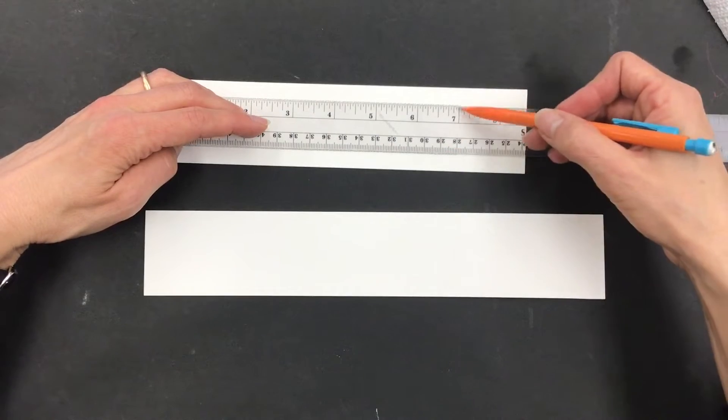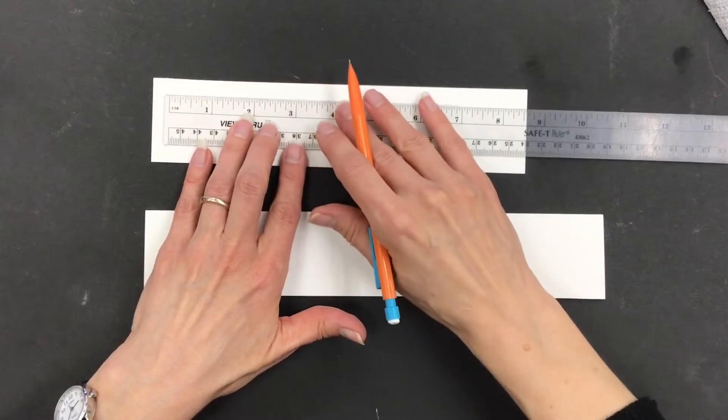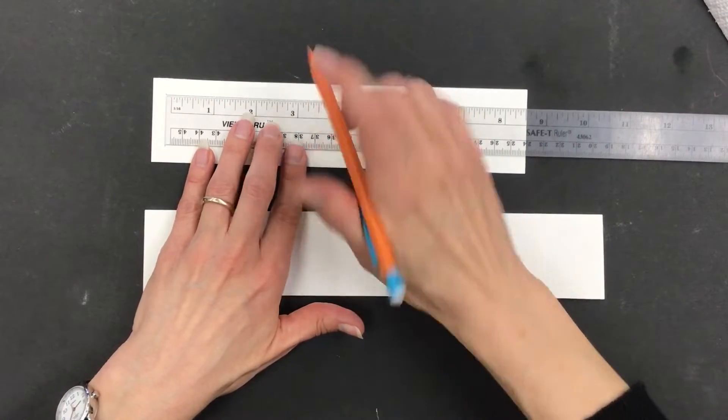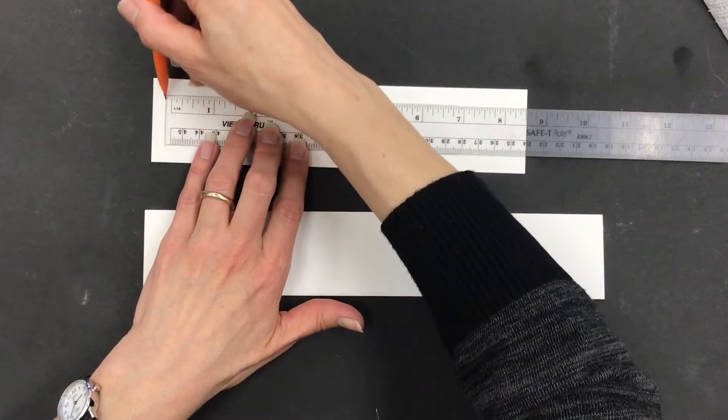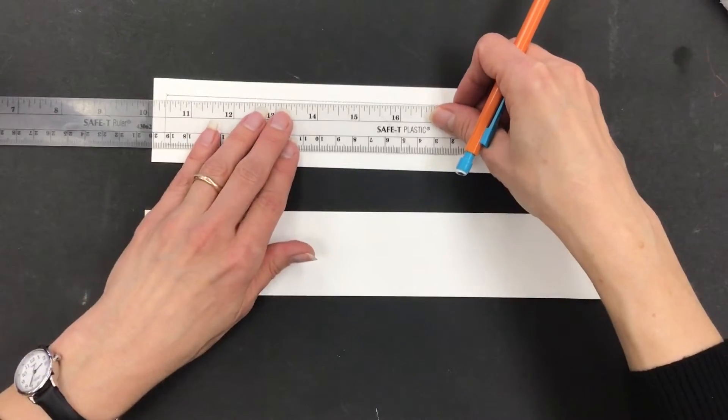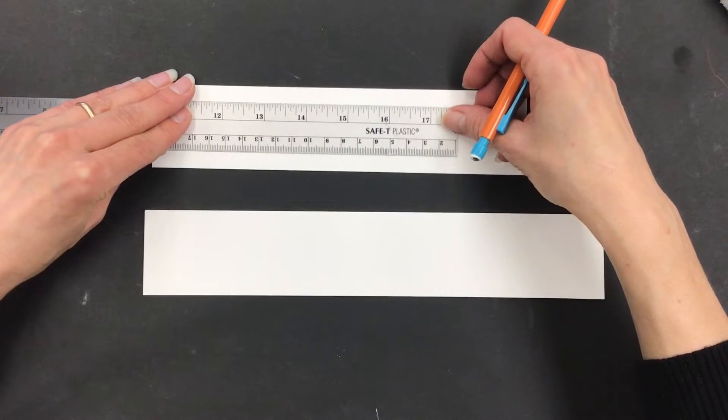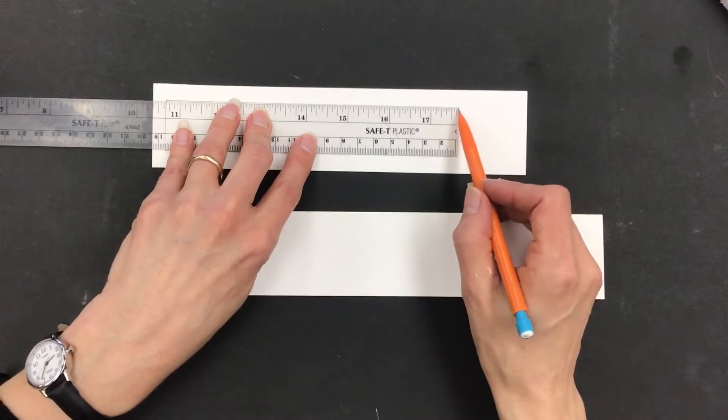And then straight across, seven inches right there. I can even just slide this ruler down a teeny bit here and do a straight edge there, and kind of flip it over for the straight edge on this side. Or just connect the dots. Either way, all you're trying to do is get a basic rectangle about seven inches.